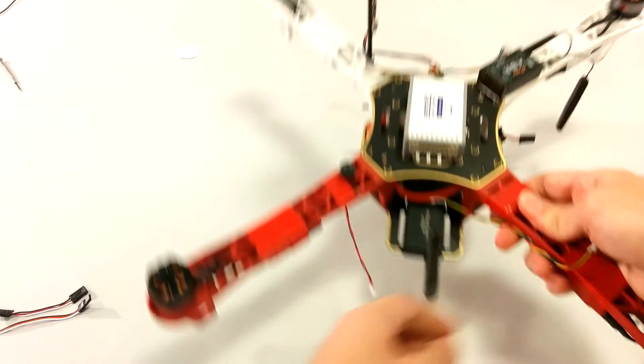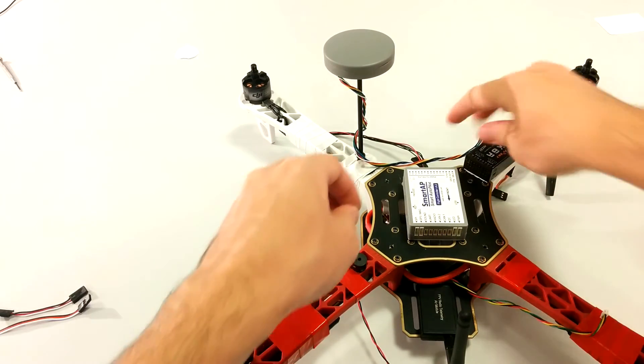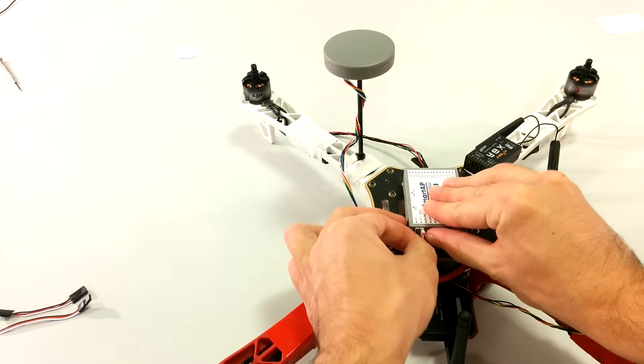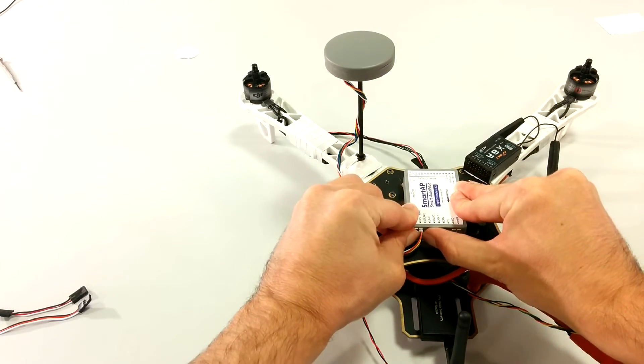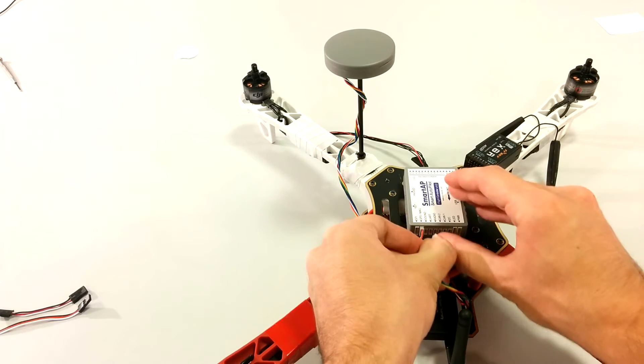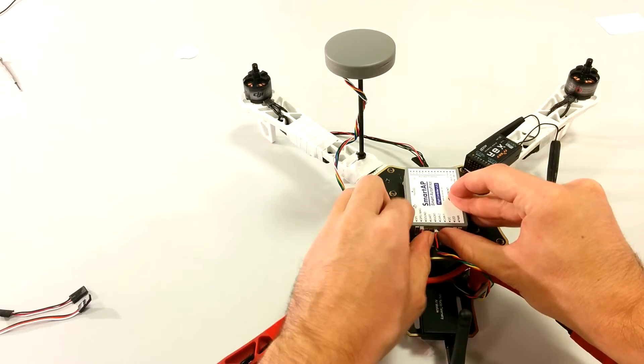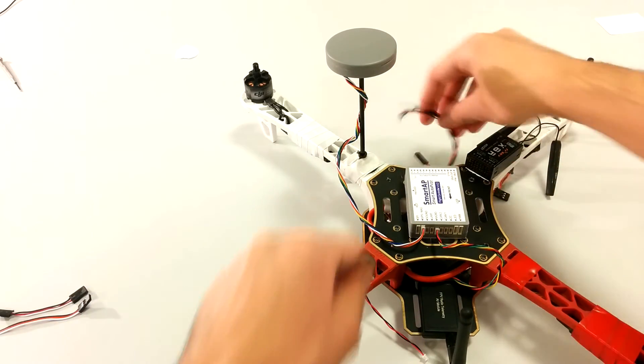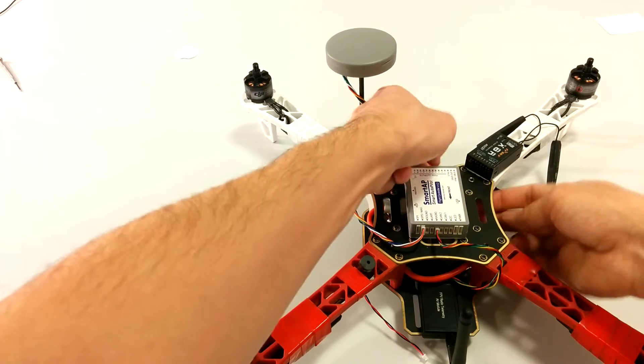Now we can connect the cables. GPS module cable goes to GPS MAG port. Telemetry module cable goes to radio port. Power module cable goes to PWR port.